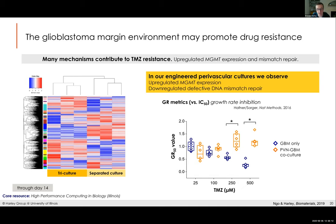We can go back and do that experiment. Looking at a GR50 metric—growth rate inhibition—we see that as we add more temozolomide onto glioblastoma cells only, we see a reduction in the GR50 value. However, when we do co-culture with vasculature, that reduction is completely lost. Using these commercially available platforms and leveraging advances in sequencing on our campus, we were able to highlight that the direct connection between vasculature and glioblastoma might be something we should be able to target in a better way.